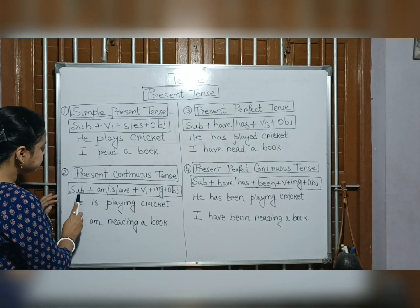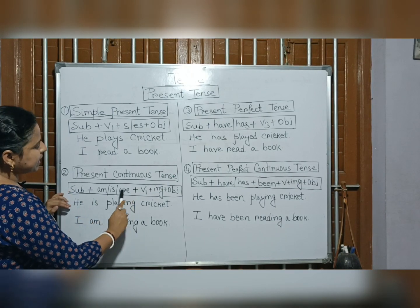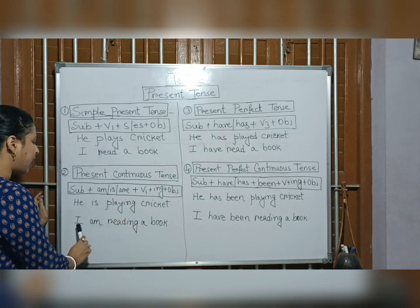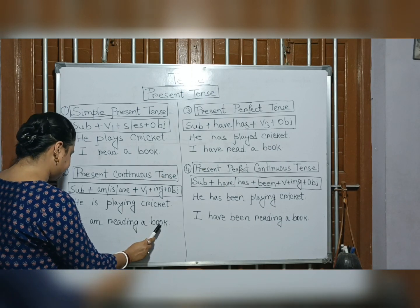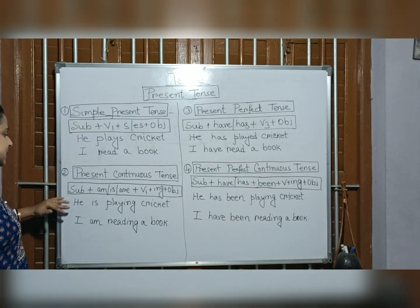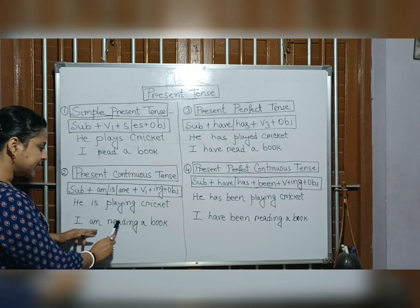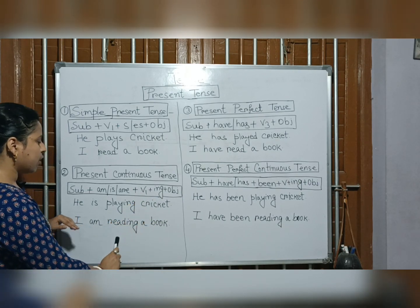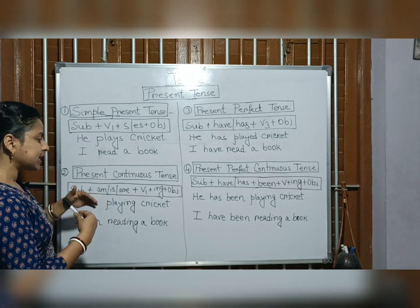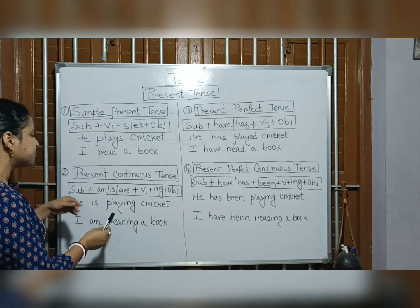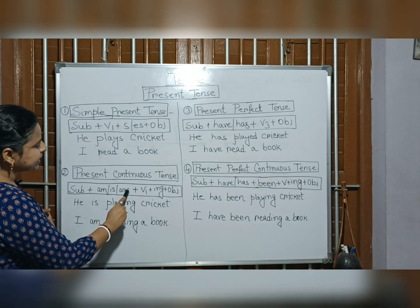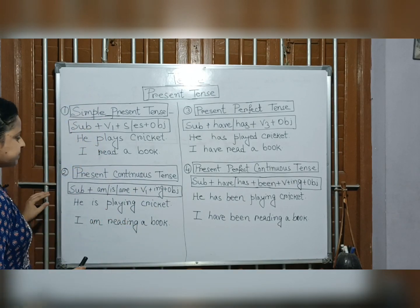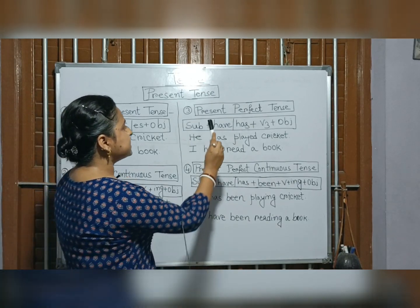For present continuous tense: the subject 'he' is playing — V plus -ing — 'he is playing cricket.' The structure is: subject plus am/is/are plus V1 plus -ing plus object.